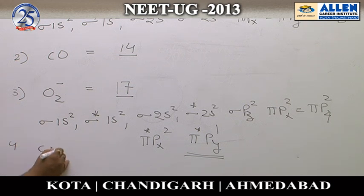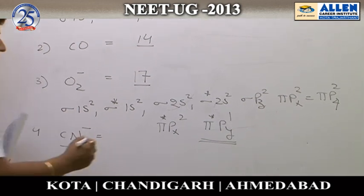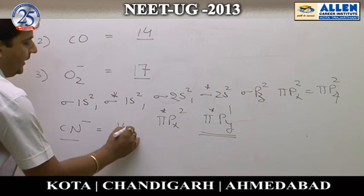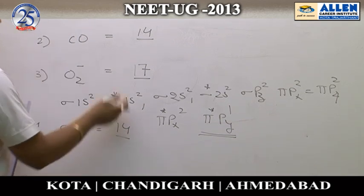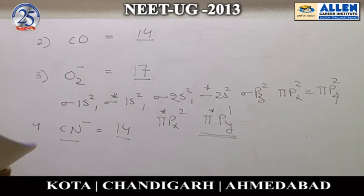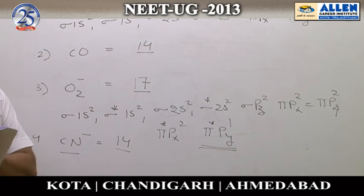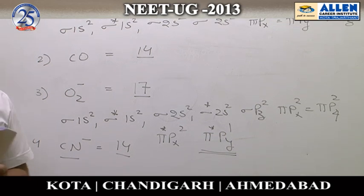For the fourth option, CN⁻: the total number of electrons again comes out to 14, same as the previous cases, so it is diamagnetic. Therefore, the answer to question 177 is the third option — O₂⁻ — which is paramagnetic.